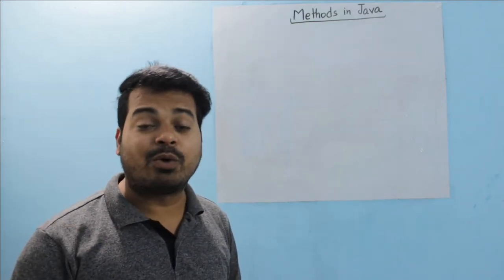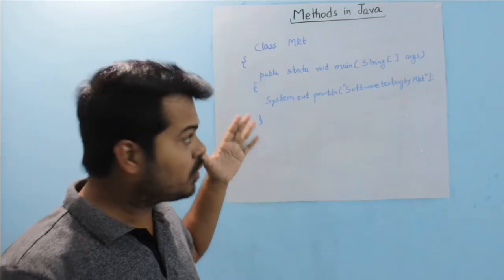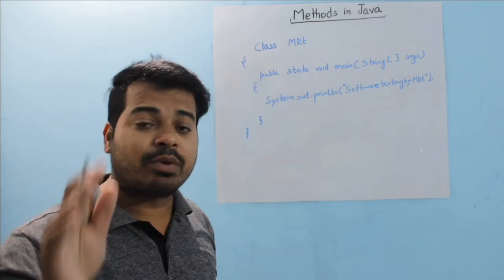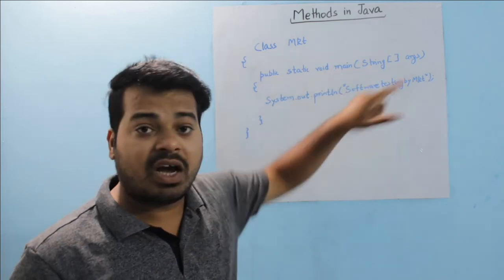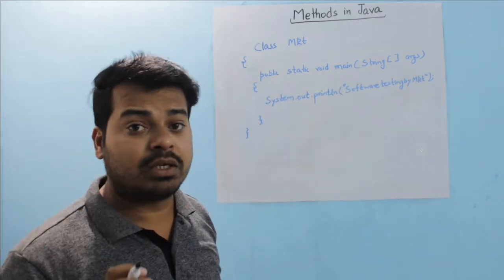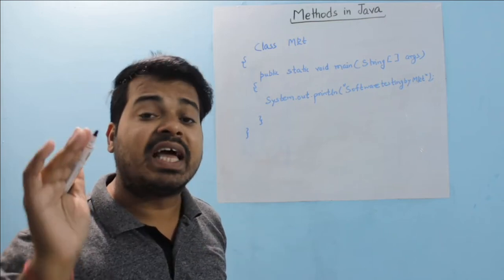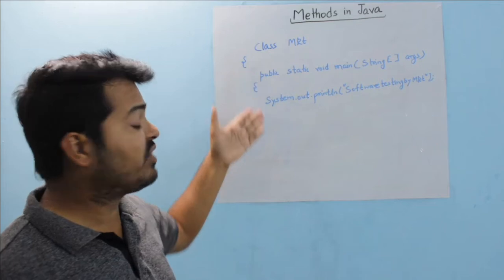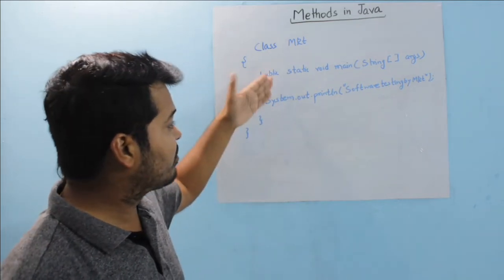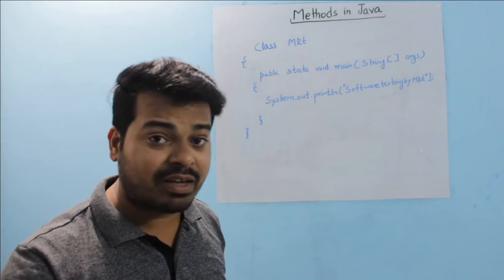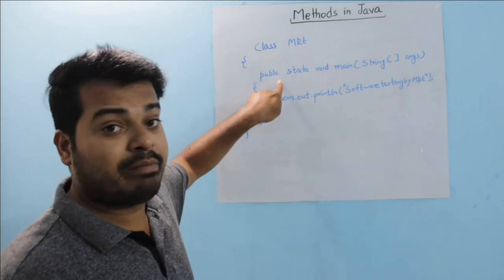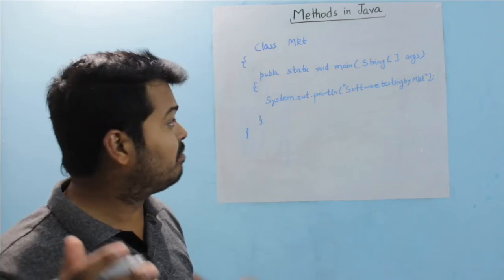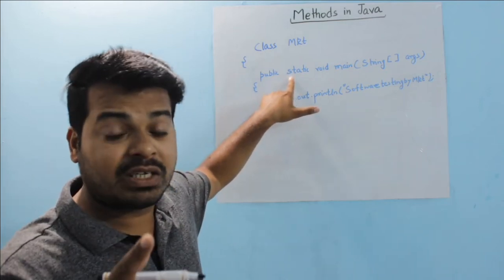If you remember when I wrote my first program — how to print 'Software Testing by MKT' — I said that is a method. Whenever you write any program in Java, your 'public static void main String args' is called the main method. Whenever any program is written, execution takes place from the main method, even if there are a thousand other methods.